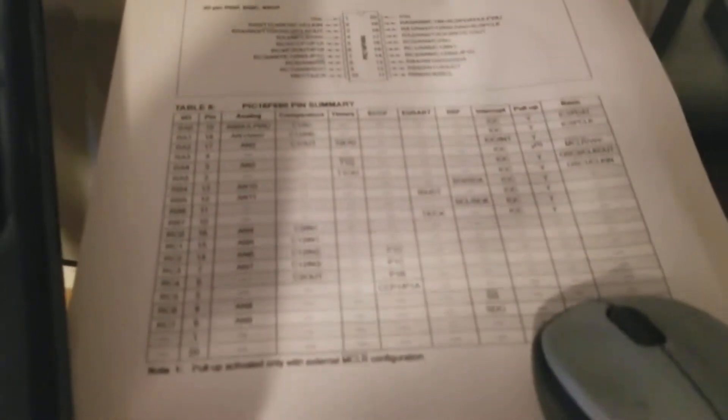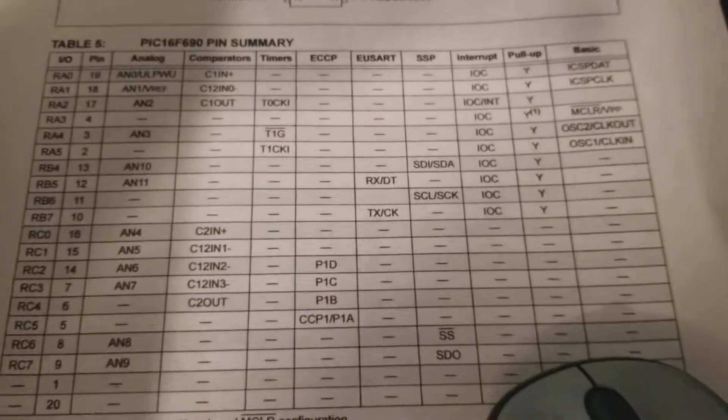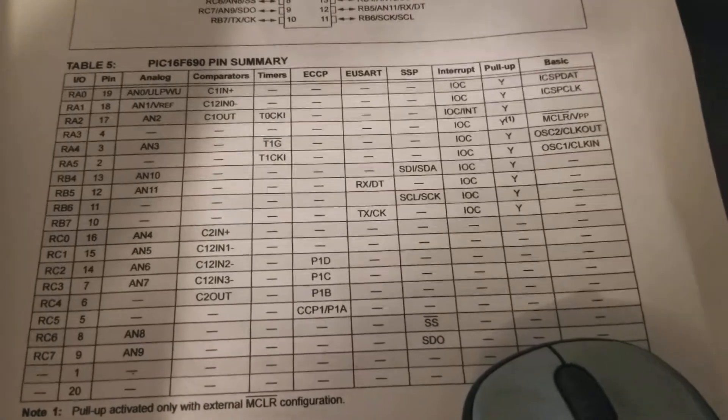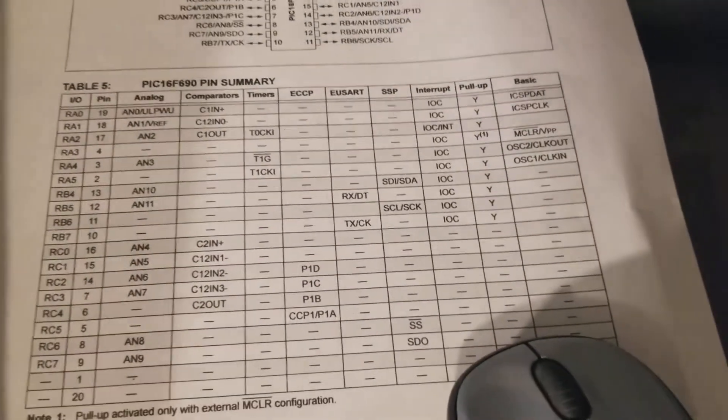So that's the data sheet. I let the pin layout. What's all on each pin. Interrupts, analog inputs, whatever. Not bad for like a $2 chip.